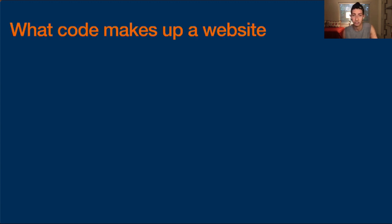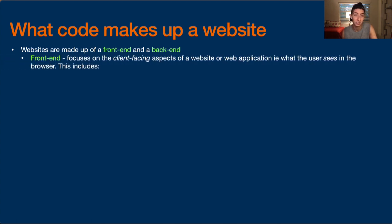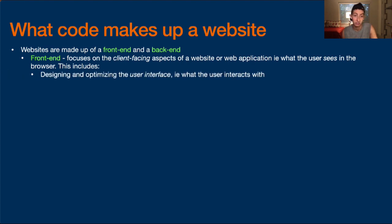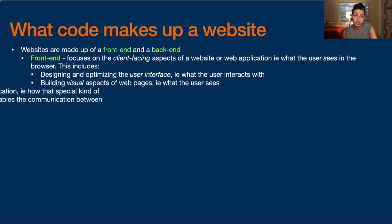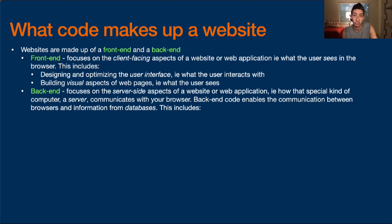So what code actually makes up a website? Websites are made up of a front-end and a back-end. A front-end focuses on the client-facing aspects of a website or web application — i.e. what the user sees in the browser. This includes designing and optimizing the user interface, what the user interacts with. When you go to google.com, the front-end is the web page that has the Google logo and the Google search. It's what the user sees, what the user is interacting with — clicking on things, filling out forms, using the search toolbar.